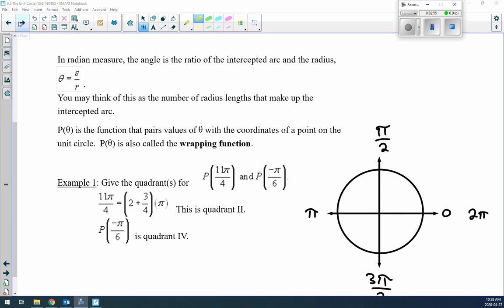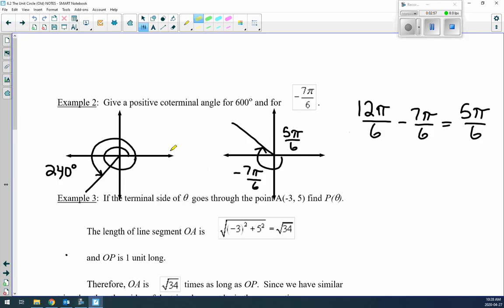Go to the third page here and let's talk about two more examples. Give a positive coterminal angle. Remember what coterminal is—it's just another angle that shares the same terminal arm as the original. So 600 degrees: we go around the unit circle once (360 degrees), then another 240 degrees to get to 600. So 240 and 600 are coterminal angles because they share the same terminal point.